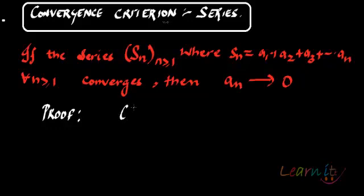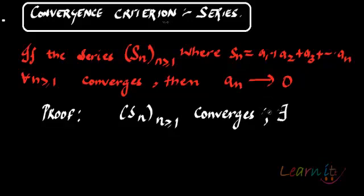You have Sn, n greater than or equal to 1, it converges. So that would mean that there would exist a limit, therefore there will exist a limit of this sequence of partial sums.